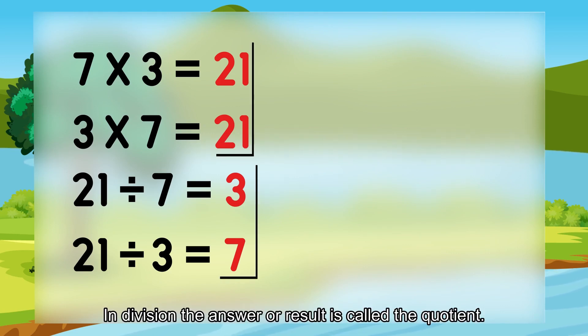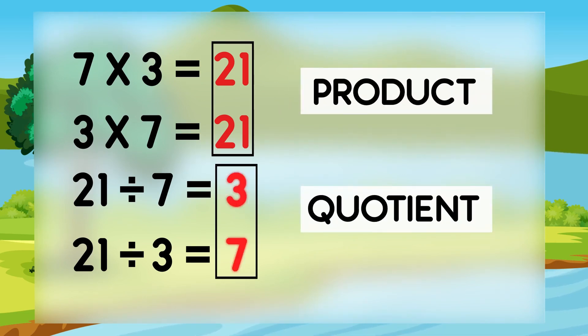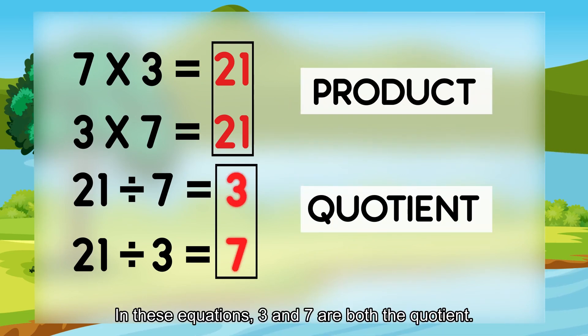In division, the answer or result is called the quotient. In these questions, 3 and 7 are both the quotient.